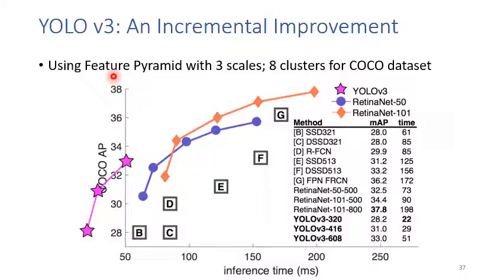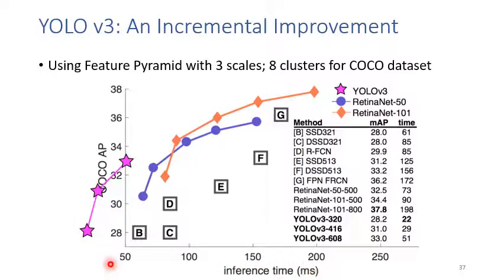In YOLO v3, the authors used the feature pyramid with three scales and increased the number of anchor boxes per cluster for the COCO dataset. An architecture called RetinaNet — based on Faster RCNN — has slightly better results than YOLO, but YOLO is much faster than RetinaNet. YOLO is still the fastest detector at that time.